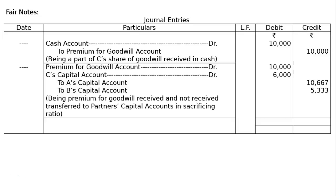Second entry: Premium for Goodwill account debited 10,000, C's capital account debited 6,000.